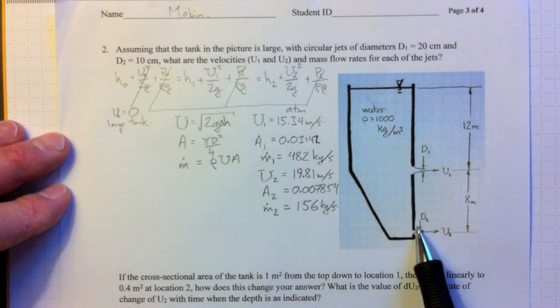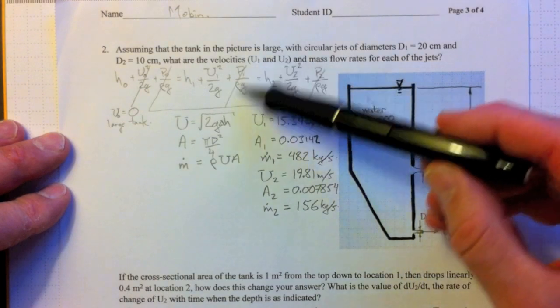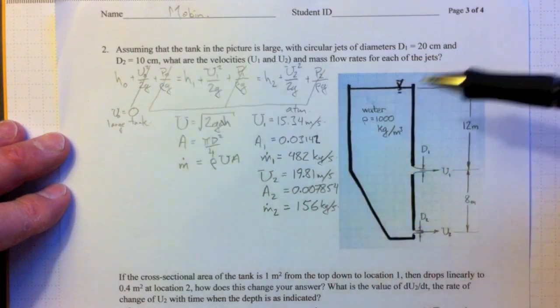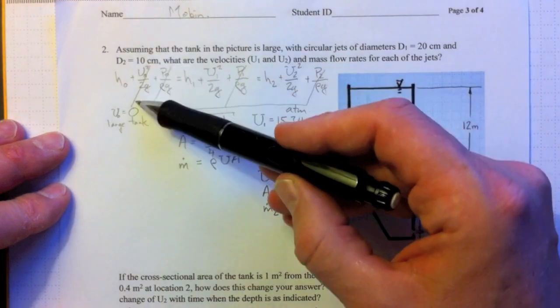or the total amount of energy that we have at location 2. The pressures at all three locations are atmospheric, so they cancel out. Up here at the surface, if the reservoir is large, and we're making the assumption for now that it's large, then the velocity of the surface will be zero. So that will cancel out as well.